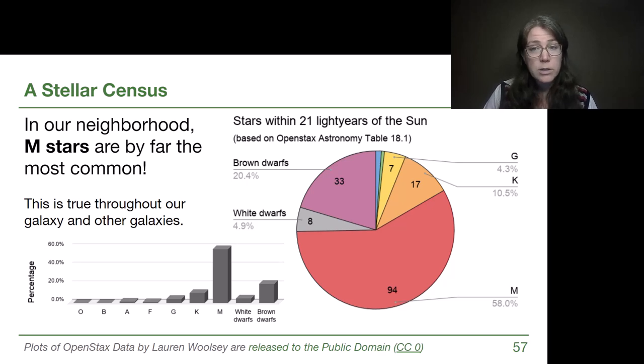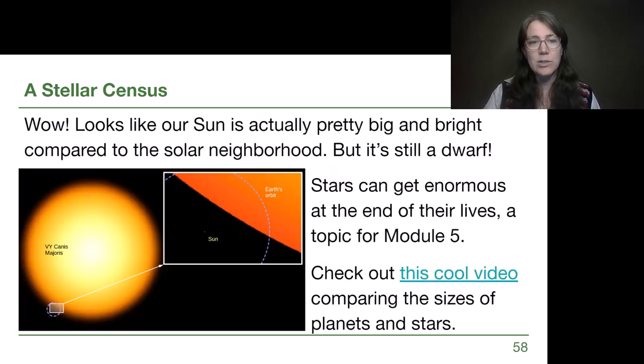And if we look, something really important comes up too. There are zero, none, zero O and B stars in our neighborhood. That is also really interesting and extremely useful for us because it is only those O and B type stars that have the possibility of exploding at the end of their lives. So we have a nice safe solar neighborhood. No supernova are going to be occurring near us anytime soon.